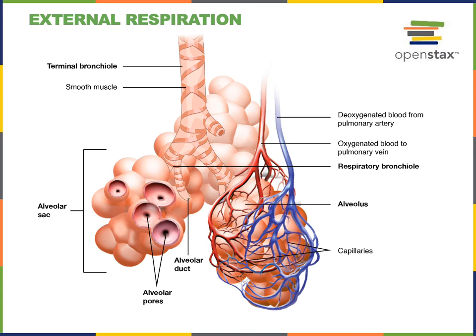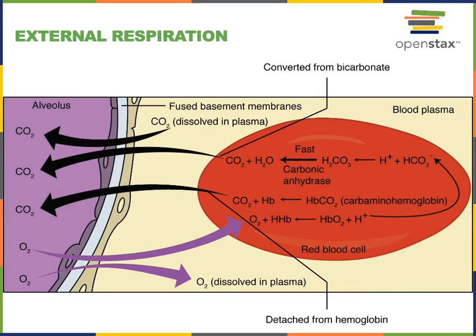External respiration is the aspect of gas exchange which occurs in the lungs, and so a major function of the respiratory system is gas exchange — in particular external respiration, where gas exchange occurs between the blood of the pulmonary capillaries and air inside the lungs. The air inside the lungs exchanges gas across the wall of the alveoli and the wall of the capillary. In external respiration, oxygen moves from the alveolus — the singular of alveoli — as shown in this diagram.